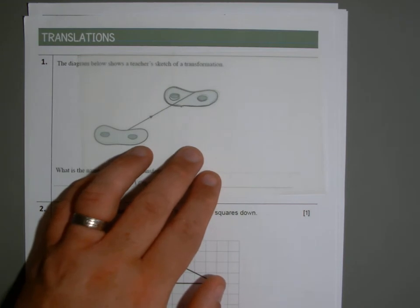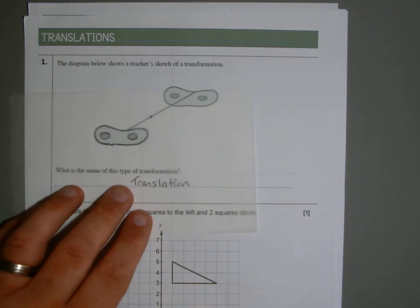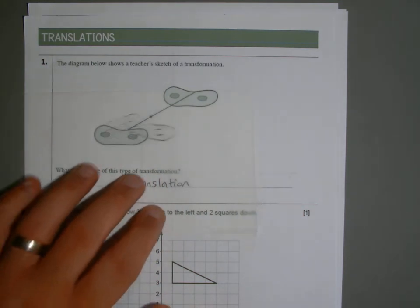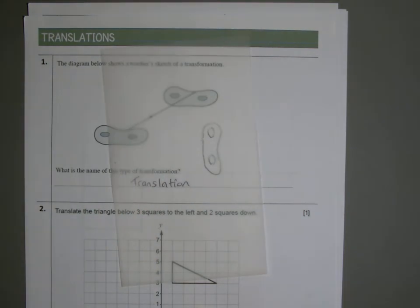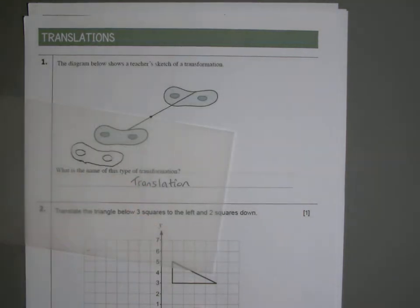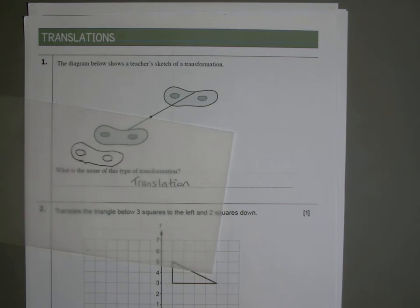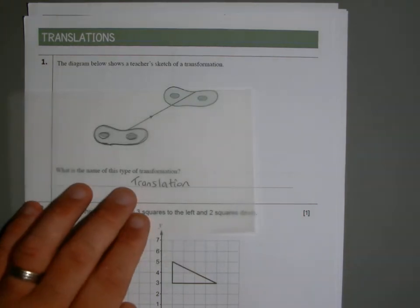What hasn't happened is that it hasn't rotated. That's important because if it had rotated, we would say the transformation is a rotation. It also hasn't got larger or smaller — if that were the case, it would be an enlargement. Also, it hasn't been reflected; there's no mirror image, so it's not a reflection.